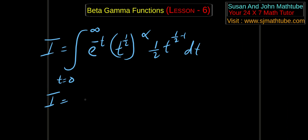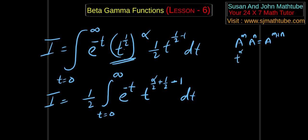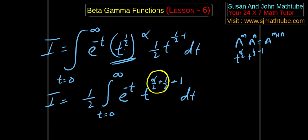We get I equals integral from t equals 0 to infinity of e to the power minus t, times x to the power alpha — where x is t to the power 1 by 2 — times dx which is 1 by 2 times t to the power 1 by 2 minus 1, dt. The 1 by 2 moves outside. Applying laws of indices — a to the power m times a to the power n equals a to the power m plus n — we get t to the power alpha by 2 plus 1 by 2 minus 1. We have perfectly 0 to infinity of e to the power minus t, and instead of n we have alpha by 2 plus 1 by 2. So the answer is Gamma of (alpha plus 1) by 2, taking LCM. That's it.